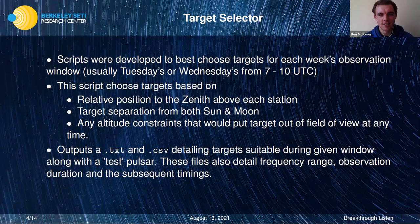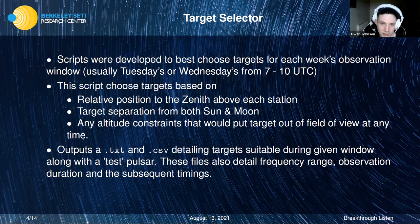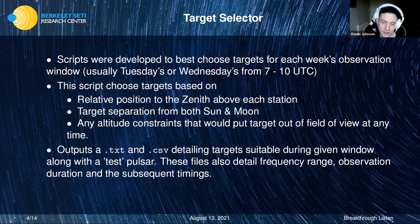Owen developed the target selector script. The main goal was to perform the first SETI searches from Ireland using this dual-site setup. The key challenge was identifying targets visible from both stations simultaneously. A script was developed where you input a date, observation window, and duration, and it selects targets based on their position relative to the zenith of both ILOFAR and LOFAR SE, their separation from the sun and moon, and any altitude constraints. It outputs a text file and CSV with suitable targets in a format usable directly by the team in Sweden.